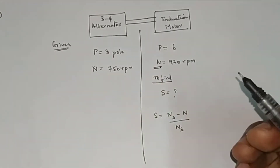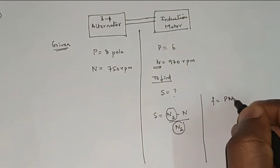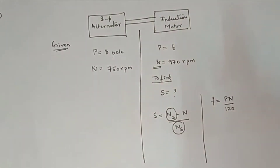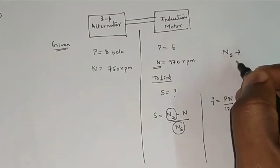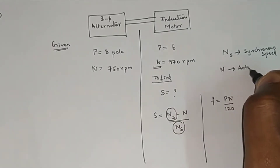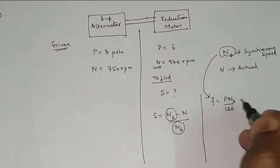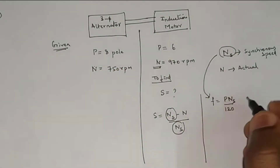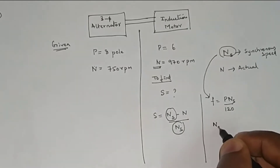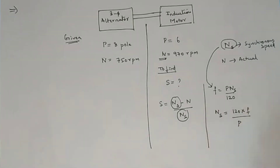The actual speed N = 970 rpm is given, but we don't know synchronous speed Ns. To find synchronous speed, we use the frequency formula: f = P × N / 120. Under an induction motor there are two speeds — synchronous speed and actual speed. Synchronous speed relates to supply frequency, so we rearrange to get: Ns = 120 × f / P.